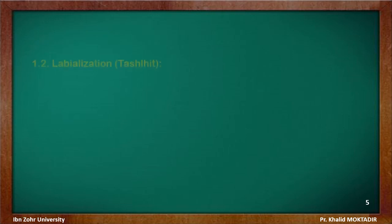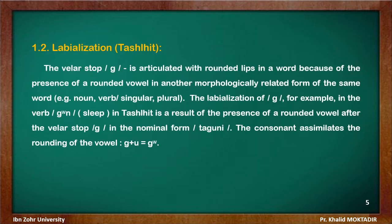Now we look at labialization. Remember, labialization is a secondary articulation where consonants — usually stops — are pronounced at their point of articulation but are released at the same time with rounded lips.